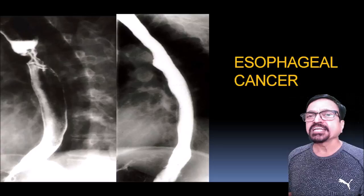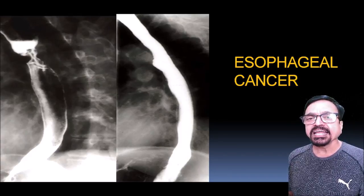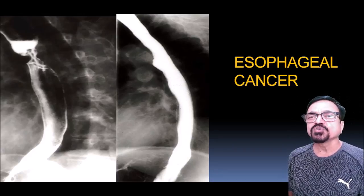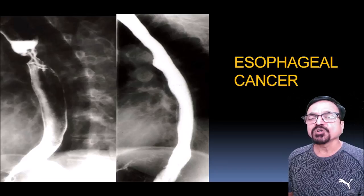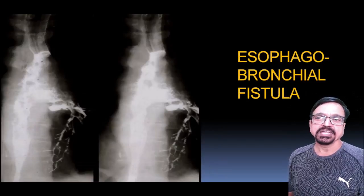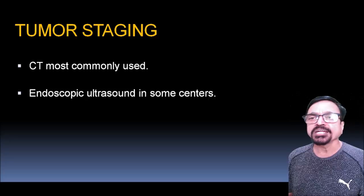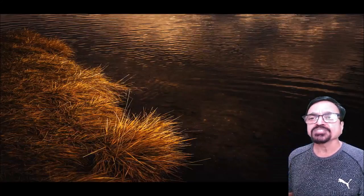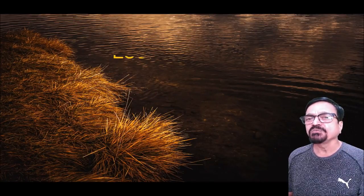Features of esophageal cancer on barium swallow: non-distending segment, proximal dilatation, fluid level in the esophagus (always pathological), and mucosal irregularity. A fluid level in a dilated segment of esophagus indicates abnormality. Esophagobronchial fistulas can be congenital tracheoesophageal fistulas (H-type) or secondary to malignancies or iatrogenic procedures. For tumor staging, CT is most commonly used; endoscopic ultrasound is used in some centers but is costly.